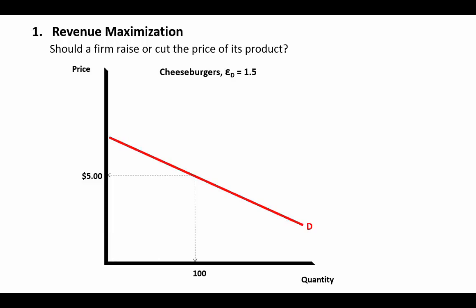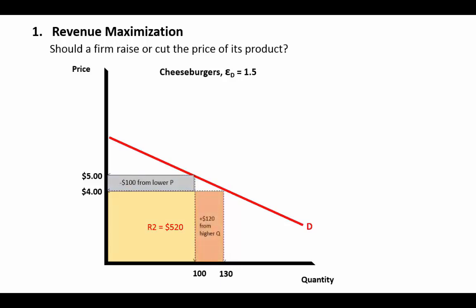Let's say you're running a cafe and you sell cheeseburgers, and we've got a calculated elasticity coefficient of 1.5, so they have pretty elastic demand. Starting with 100 burgers sold per week at a price of $5. Demand is elastic, meaning if we cut price by 20% — that's $1 — we'll have a 1.5 times greater percentage increase in quantity: a 30% increase. Quantity goes from 100 to 130. Revenue now is $520, so we see a $20 increase in revenue. We gained more from higher quantity than we lost from the lower price.